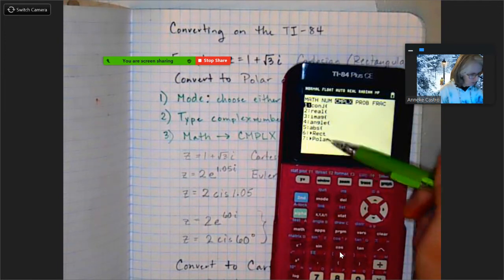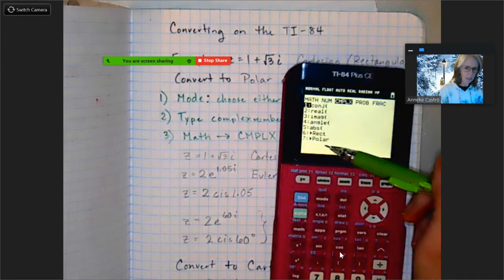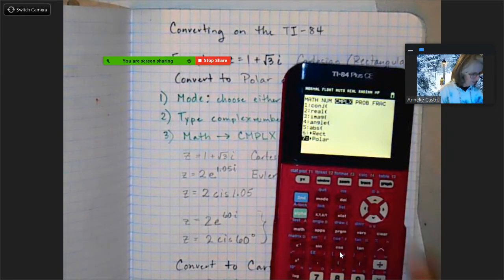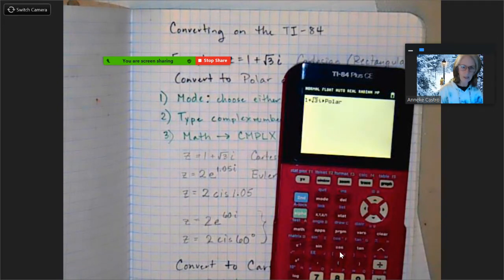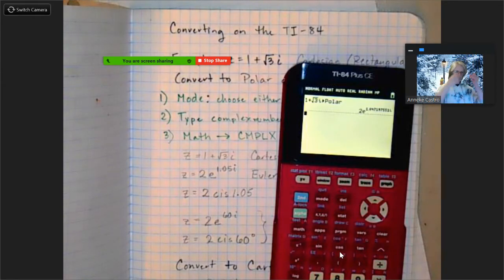Notice my choices down here at the bottom are the two we're interested in. I'm in rectangular so I don't want that one, I want to go to polar. So I'm going to select option 7 and then hit enter.